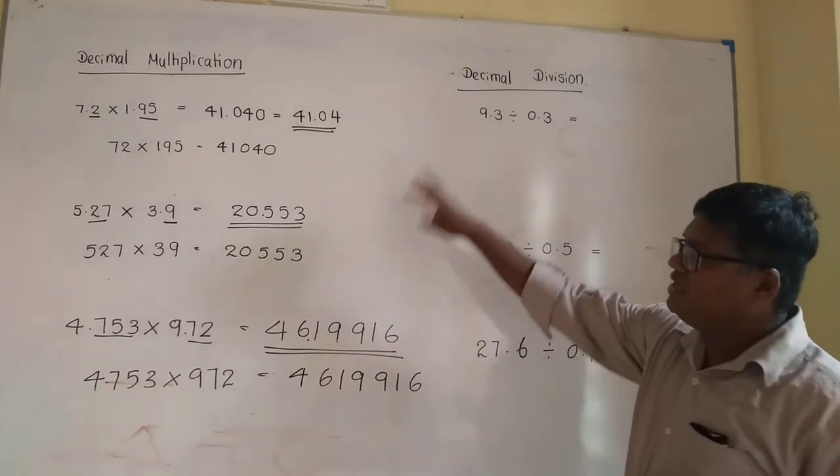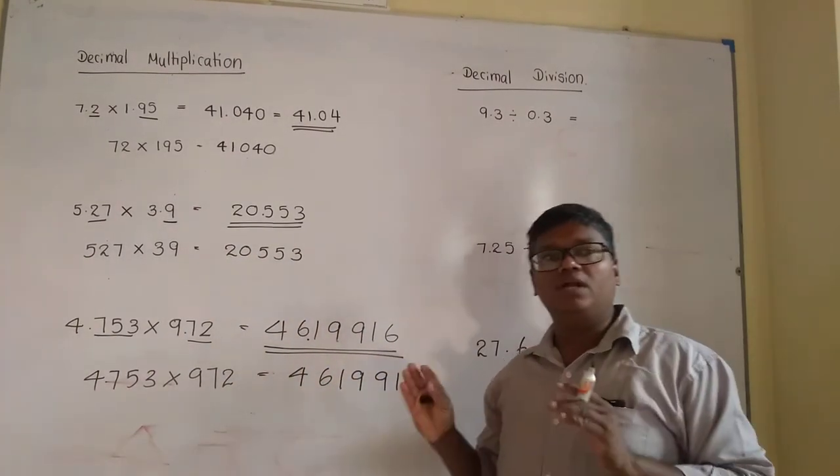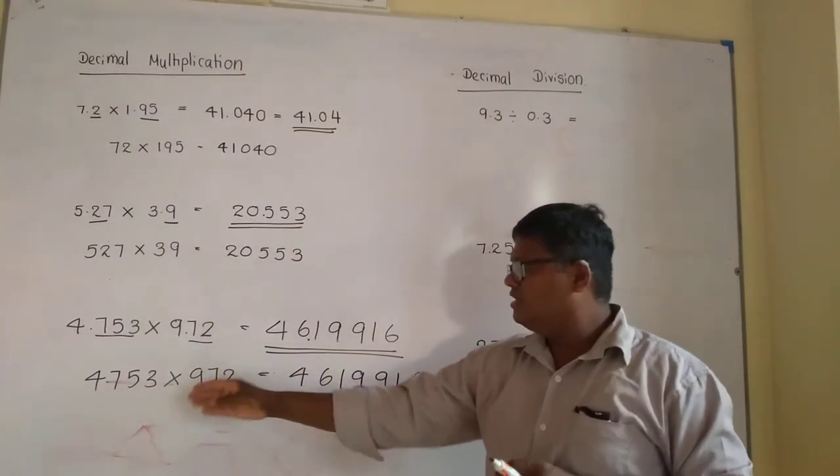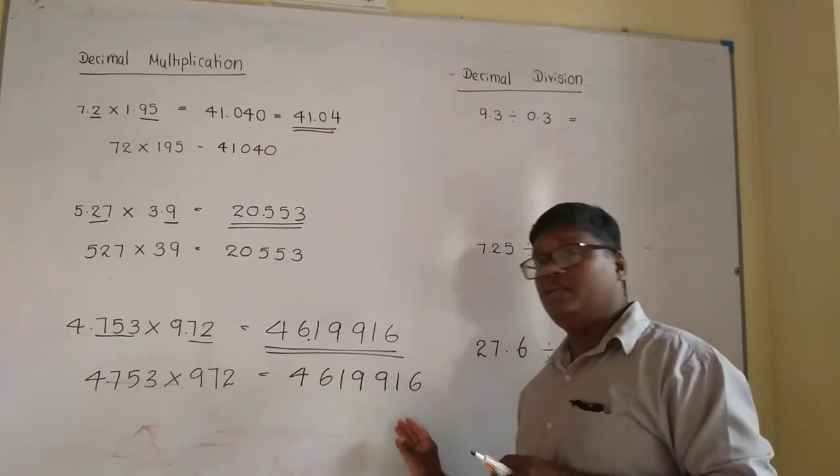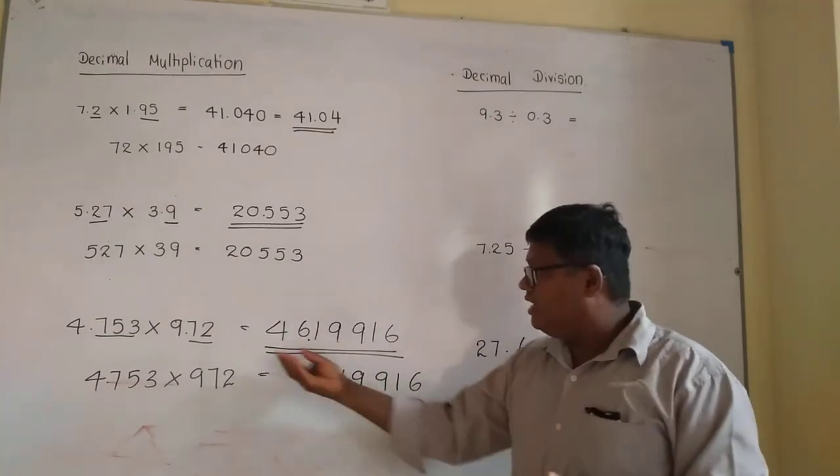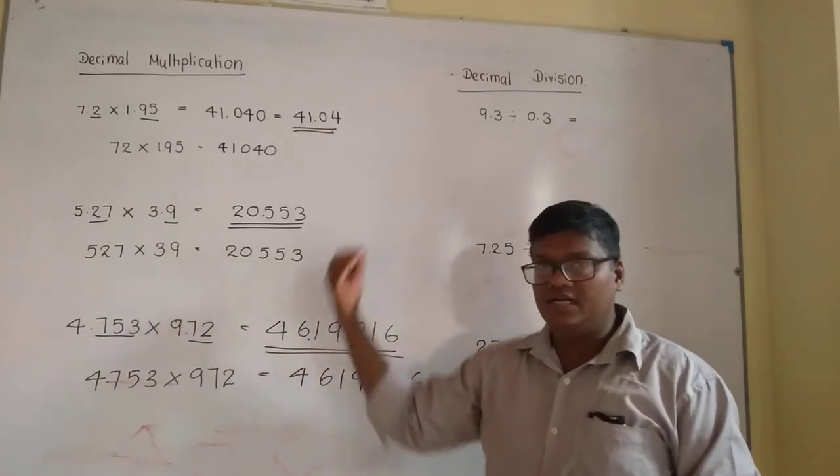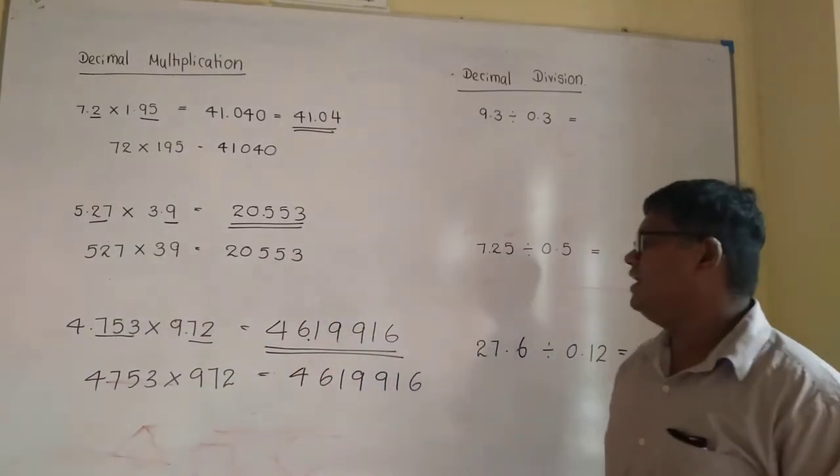That is about multiplication. You can multiply any decimal number by another decimal number. Forget the decimal places, multiply as an ordinary number. After that, count the decimal places in both multiplier and multiplicand, then write it in the answer.